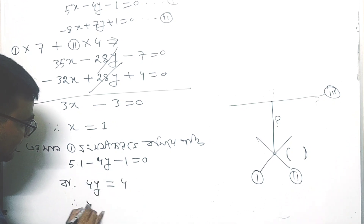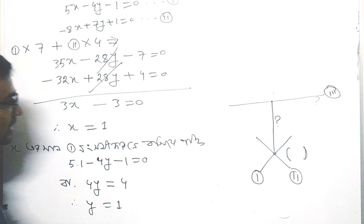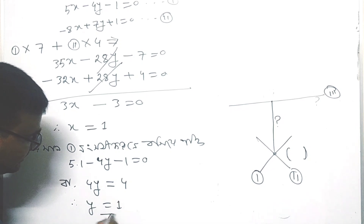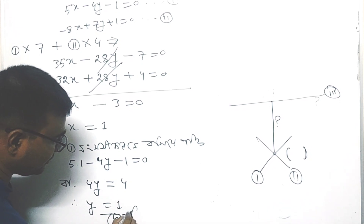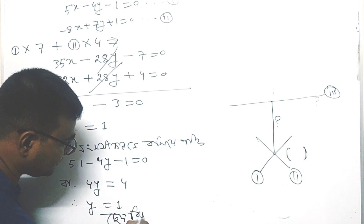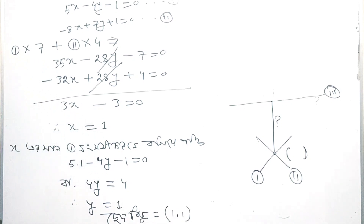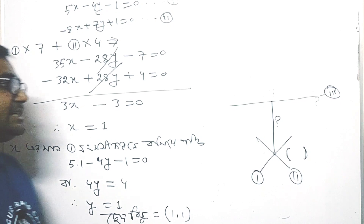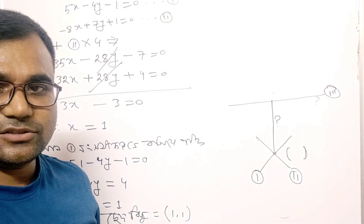Now here we have the value y = 1. We have to move to the next step with these numbers and proceed with the classic method using these extra terms.